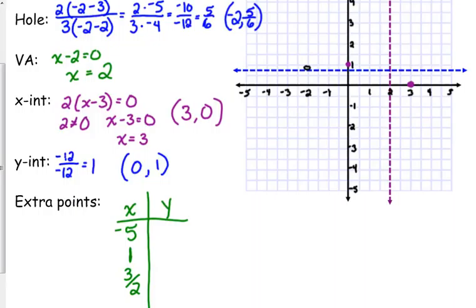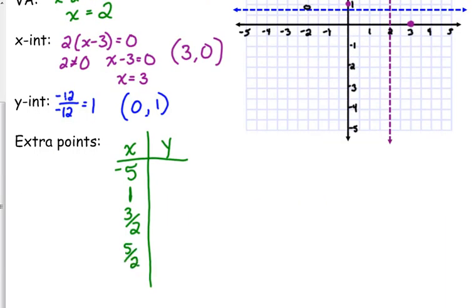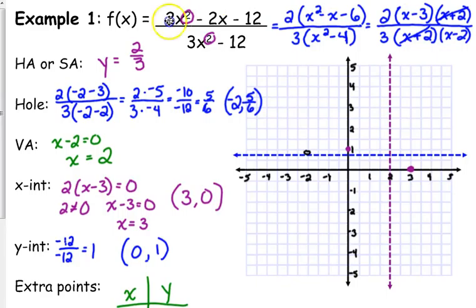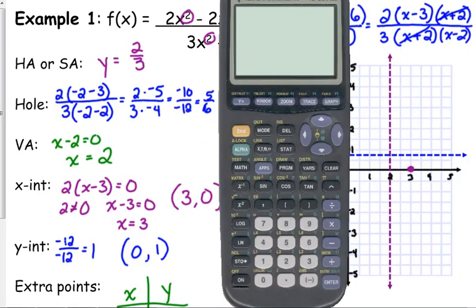I'm also going to do 3 halves, 1.5, just so that I get a little bit closer to my vertical asymptote to see what's going on. Same thing over here. I want to know what's going on between 2 and 3, so I'm going to do 5 halves, or 2.5. I prefer fractions. And I'm also going to do positive 5, because I want to know what's happening on that end. Now, for the sake of time, I know that I said I was going to do this without touching my calculator, but the most efficient way to plug in these values, really, is to put the equation in y equals, and then go to the table.